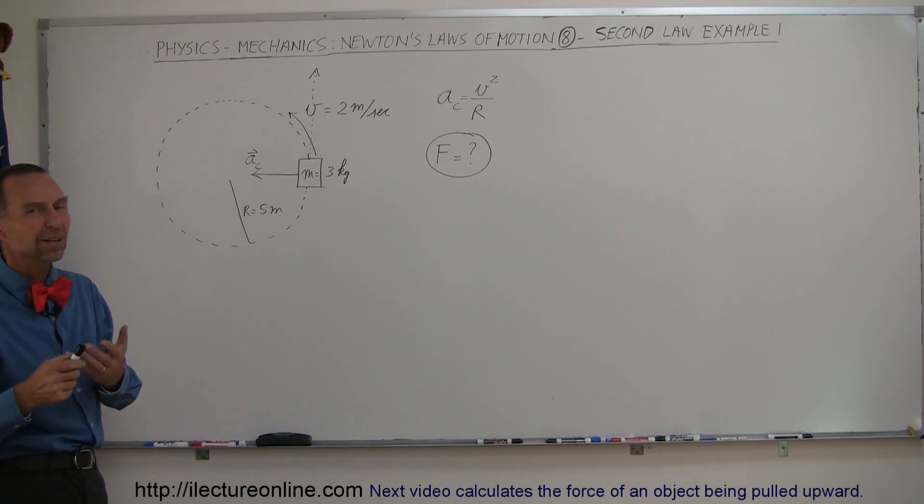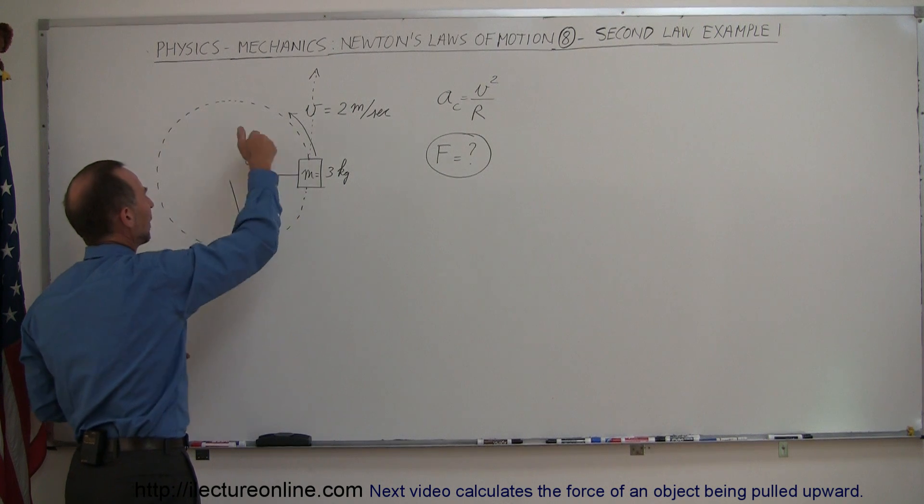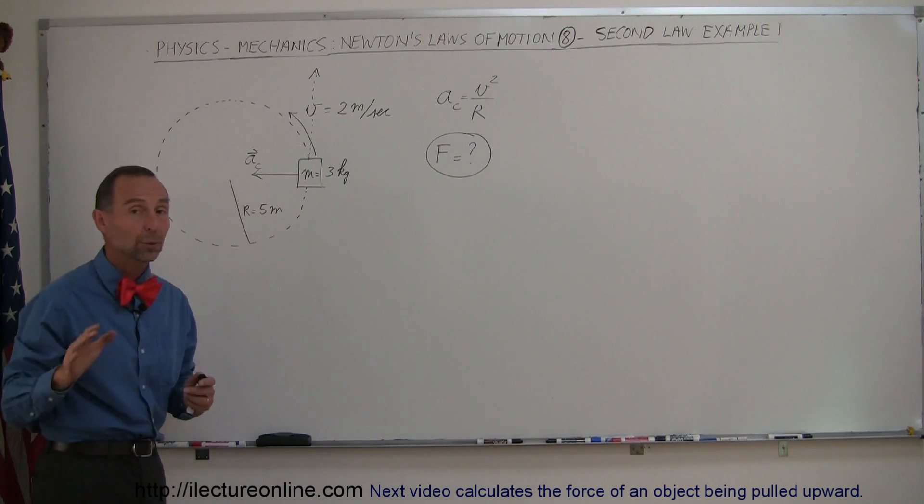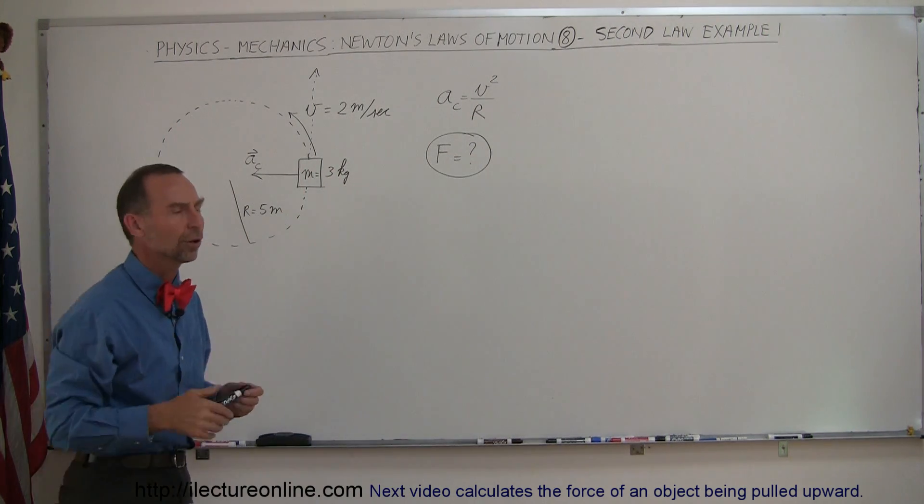So, what is that force? Well, it's known as a centripetal force, the force required to keep it going in a circular path because it requires centripetal acceleration to do that. And the equation for centripetal acceleration is v square over r, as we had seen in an earlier video.